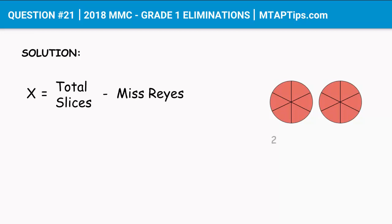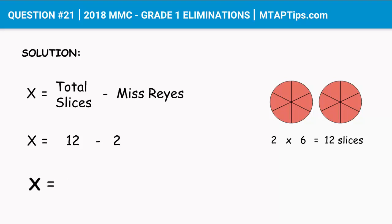Let's try to make a simple diagram. We have two pizzas, and each pizza was sliced into six pieces. So we have 2 times 6, which equals 12 slices. Going back to the equation: X = 12 minus 2 (the slices Miss Reyes got), therefore X = 10.